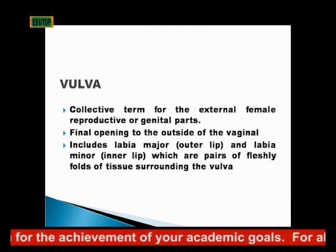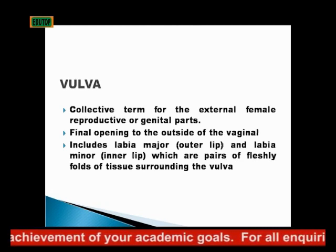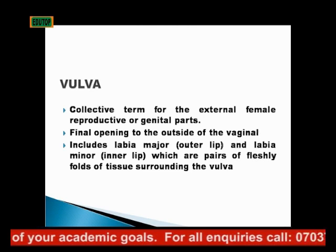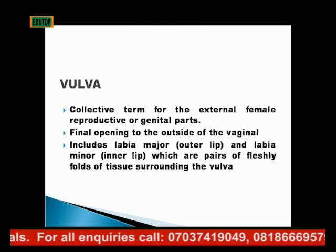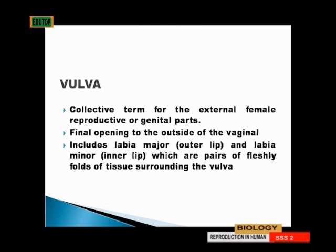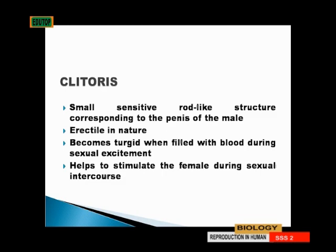The vulva is the collective term for the external female reproductive or genital parts. It is the final opening to the outside of the vagina. It includes the labia majora — the outer lip — and the labia minora — the inner lip — which are pairs of fleshy folds of tissue surrounding the vulva. The clitoris is the small sensitive rod-like structure that corresponds to the penis in the female. It is erectile in nature and becomes engorged when filled with blood during sexual excitement, helping to stimulate the female during sexual intercourse.